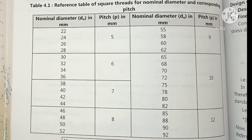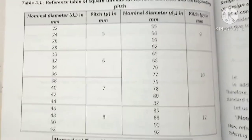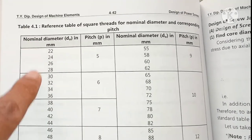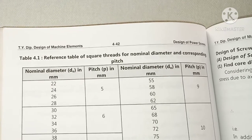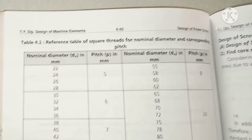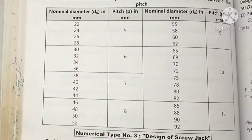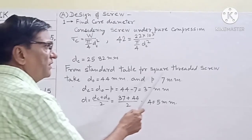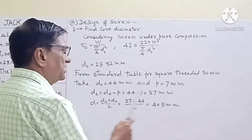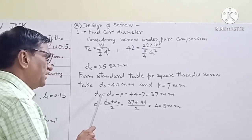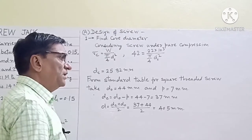Now from the standard table of square threads, the nominal diameter DO in mm is given in the first column and the corresponding pitch in mm is given in the second column. From this table, we select the standard value: nominal diameter DO is equal to 44 mm and pitch P is equal to 7 mm. From this, the core diameter DC comes out to be 37 mm and the mean effective diameter comes out to be 40.5 mm.